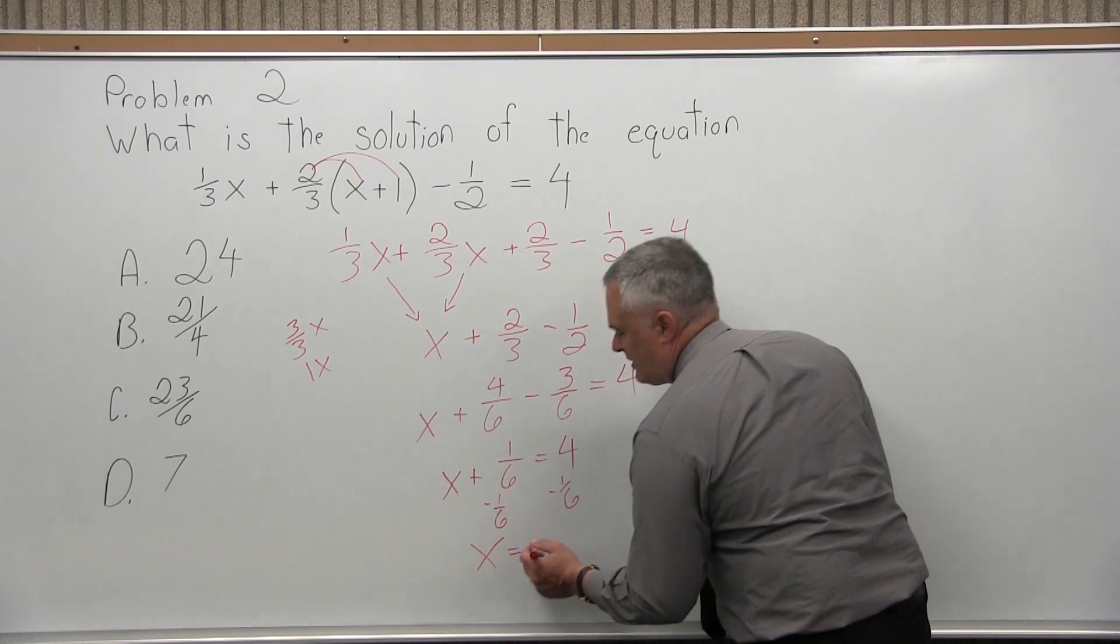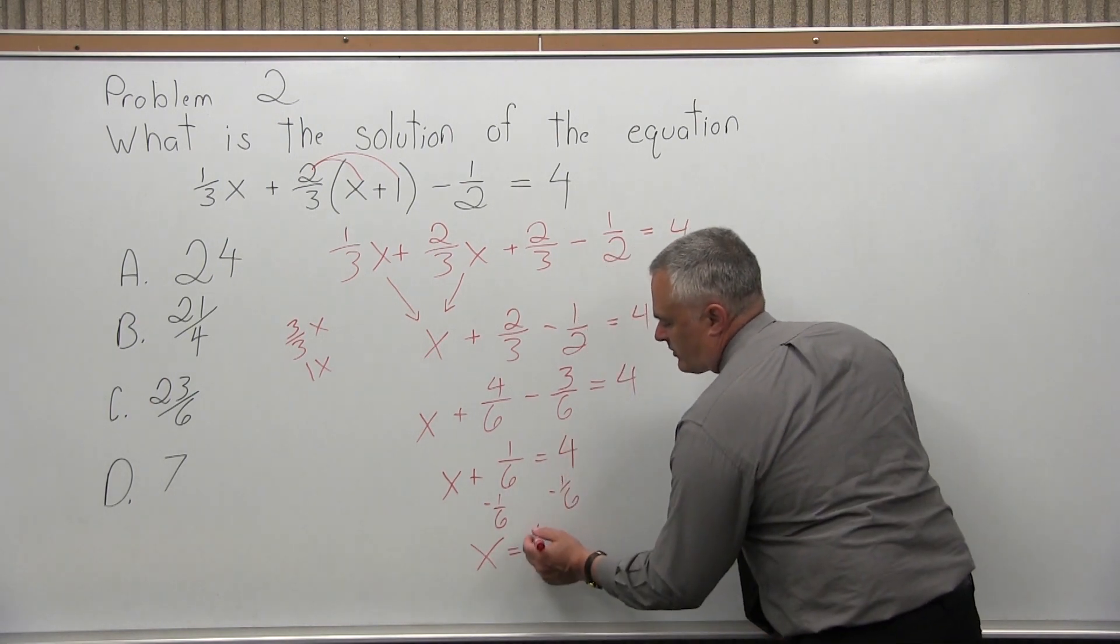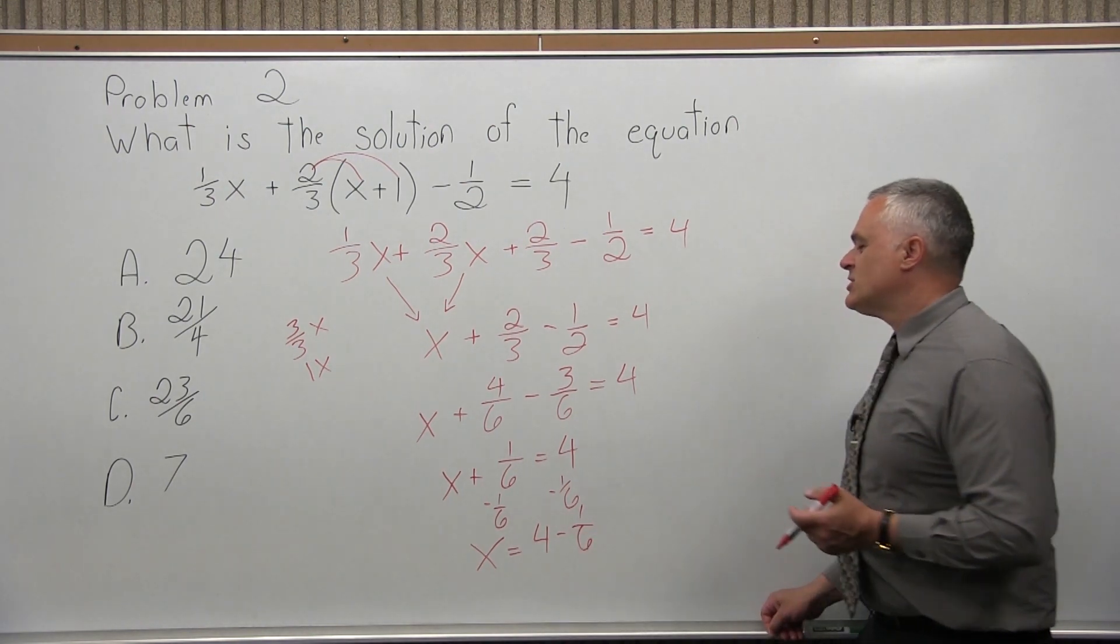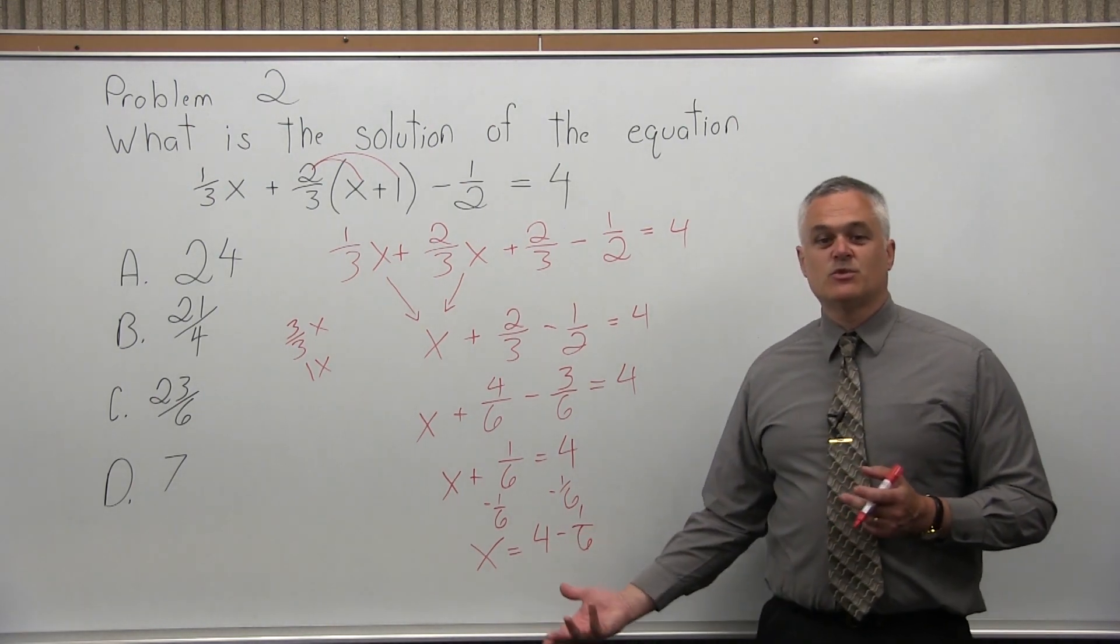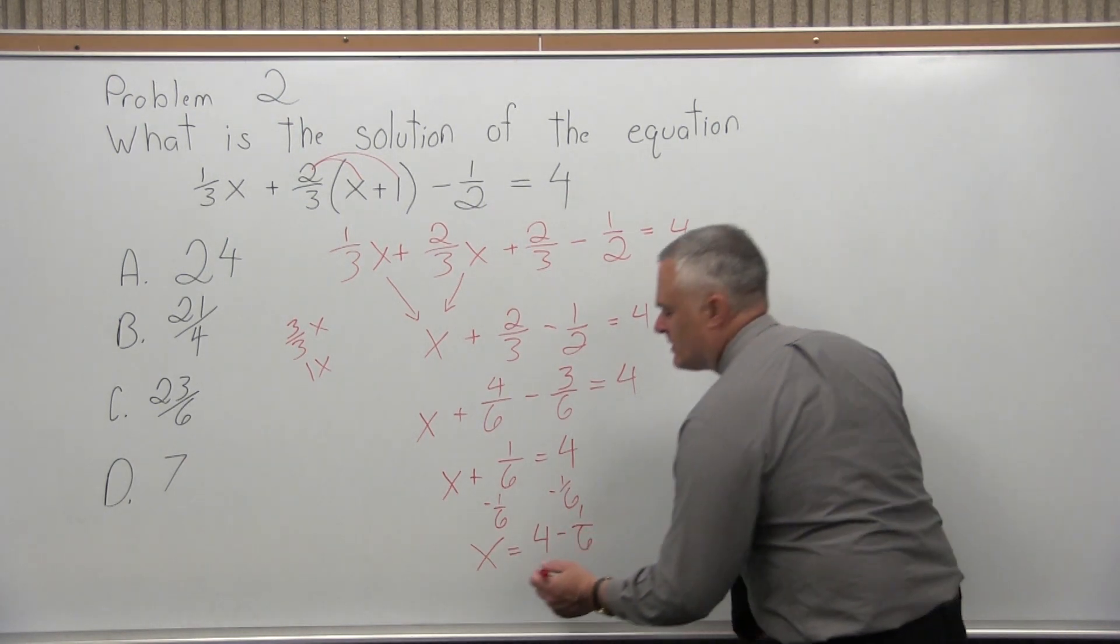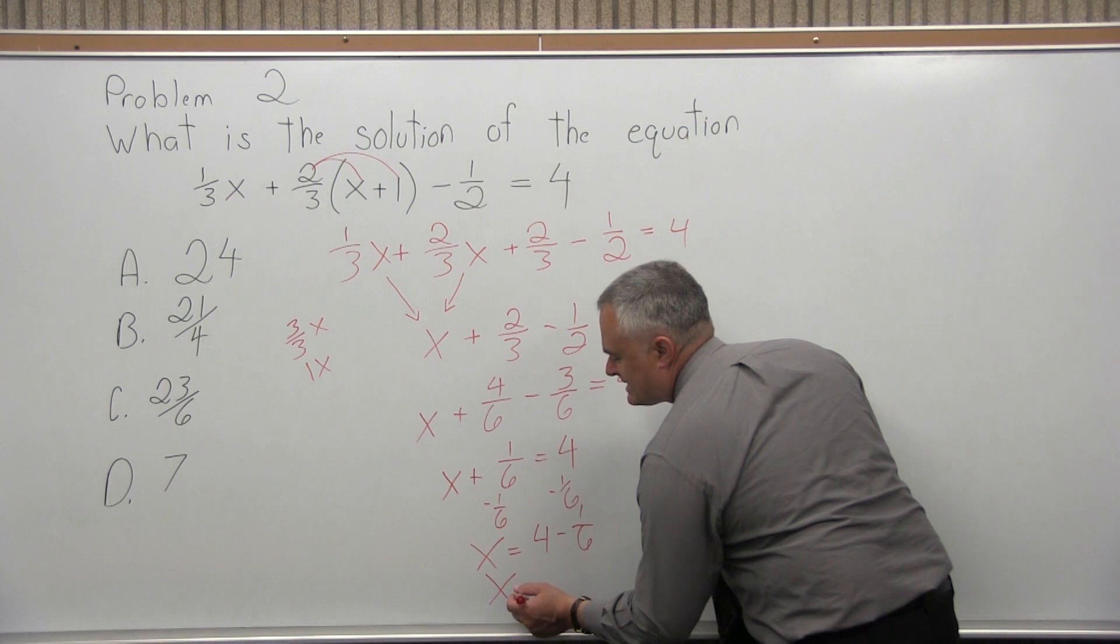You can do anything you want when you have an equation as long as you do the same thing on both sides. So, on both sides, I'm doing what I need to do to cancel the 1 over 6 on the left side of the equation and get the x by itself. So, I have x equals 4 minus 1 over 6.